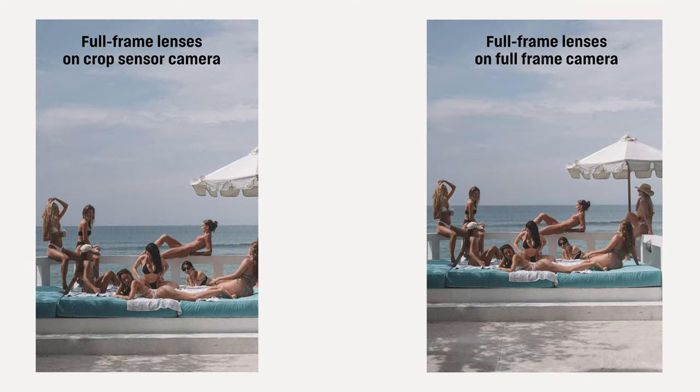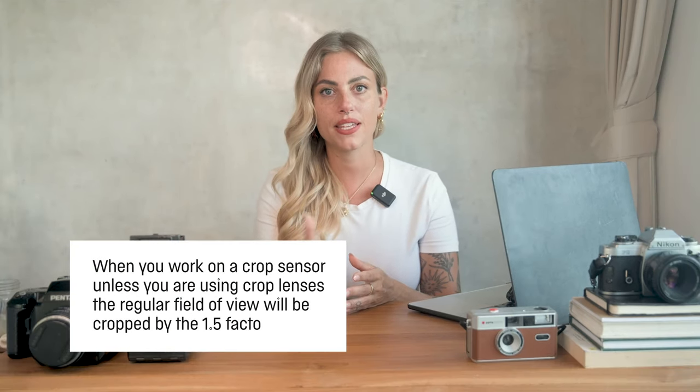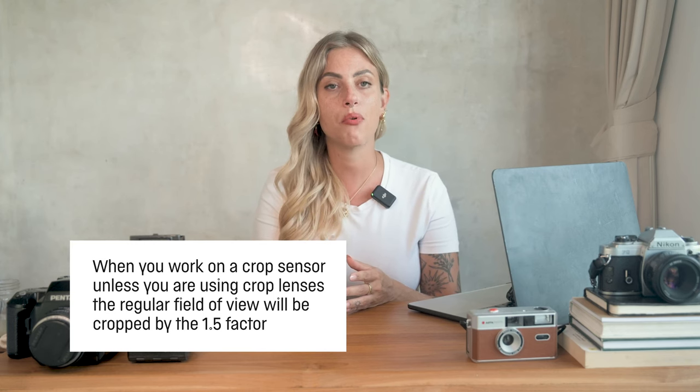While compatibility will differ from brand to brand, most brands will have a line of lenses for their crop cameras and another for their full sensor. You are usually able to use a full frame lens on a crop sensor, but you will be cropping out a third of the view. Crop lenses, which are much cheaper, you are usually not able to use on a full frame camera. When you work on a crop sensor, the regular field of view is cropped by a 1.5 factor — so a 15mm lens becomes a 75mm, and a 24mm becomes a 36mm. With a full frame camera, this is not an issue.